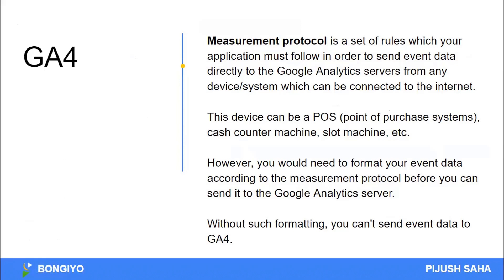Measurement protocol is a set of rules which your application must follow in order to send event data directly to Google Analytics server from any device or system which can be connected to the internet. This device can be POS, Point of Sale Systems, Cache Counter Machine, Slot Machine, etc. However, you need to format your event data according to the measurement protocol before you can send it to the Google Analytics server.